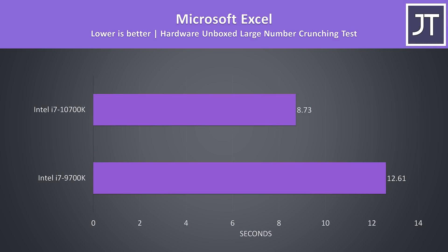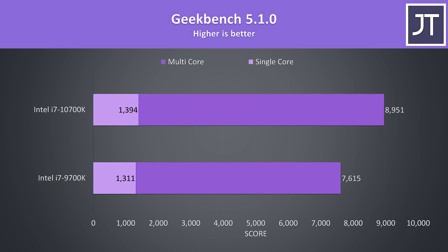In the Hardware Unboxed Microsoft Excel test, the 10700K was winning once more, completing the large number crunch test around 44% faster than the 9th gen option. The difference in single core performance with Geekbench was similar to other single core workloads tested, with the 10th gen processor scoring 6% higher, but in multi-core it was 18% ahead of the 9700K.